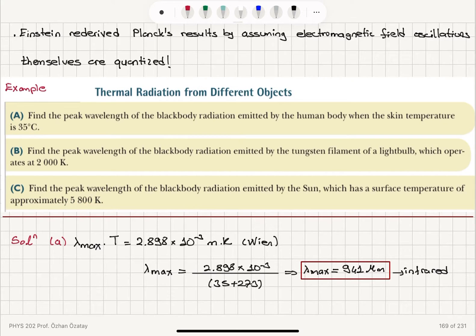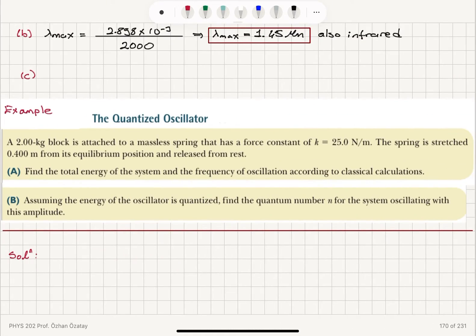find the peak wavelength of the blackbody radiation emitted by the sun, which has a surface temperature of approximately 5,800 Kelvin. Where is the peak wavelength in the sun's blackbody radiation? Lambda max is 2.898 times 10 to minus 3 divided by 5,800 Kelvin. This gives us a peak wavelength of 0.5 micrometers.